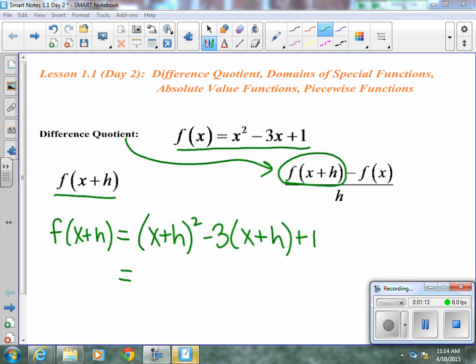Now, we can simplify this, x squared plus 2xh plus h squared, remember to FOIL when you are squaring a binomial, minus 3x minus 3h plus 1. That's f of x plus h, but that's not the entire difference quotient. It is just this part.